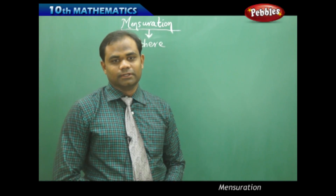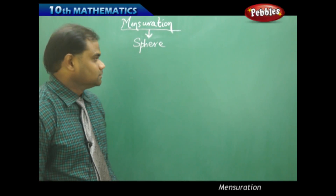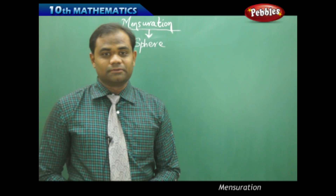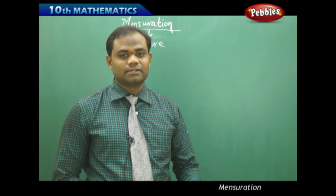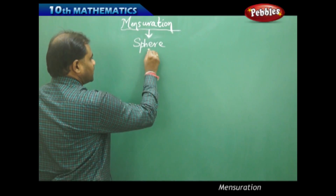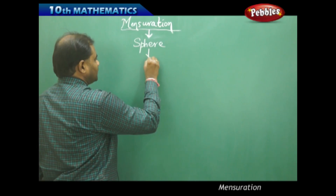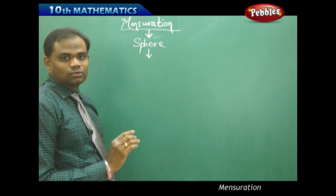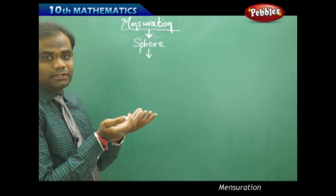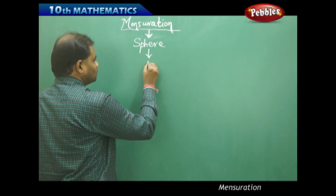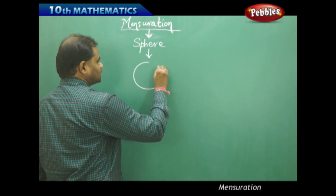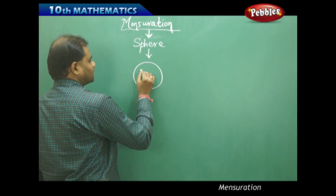The next topic is the sphere. In a sphere, let's see what is the difference between a curved surface and a total surface. As we know, every angle of the sphere is a surface which is curved, therefore the total surface area is nothing but the curved surface area.